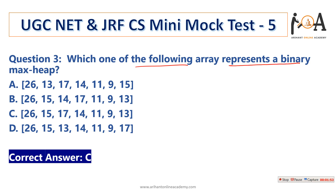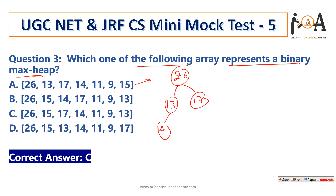The next question is: which array represents a binary max-heap? In a binary max-heap, the root element should be maximum at every stage. Looking at option A — 26, 13, 17, 14 — the max-heap property fails because 14 is a child of 13, which is not possible. So option A is wrong.